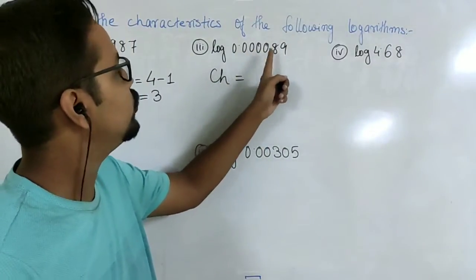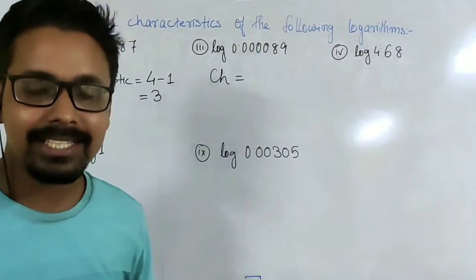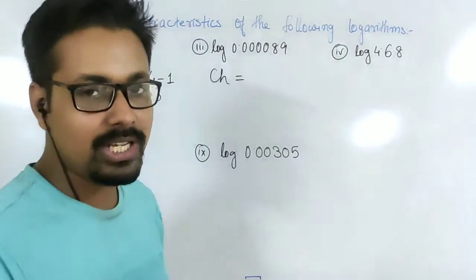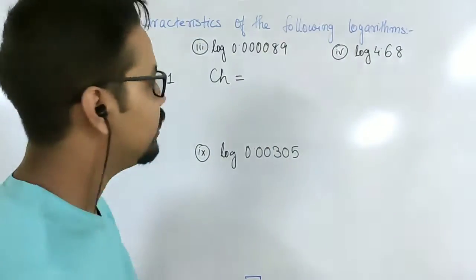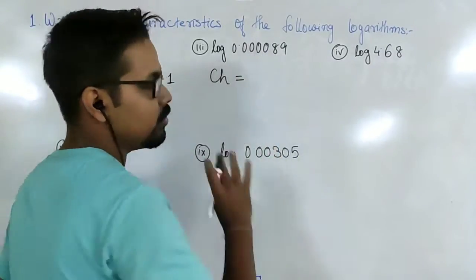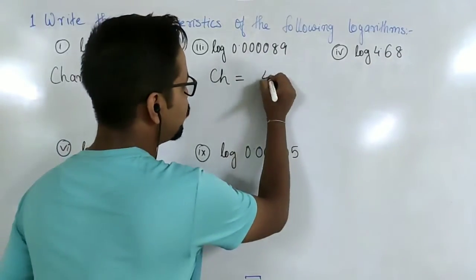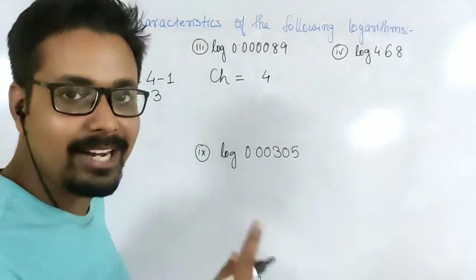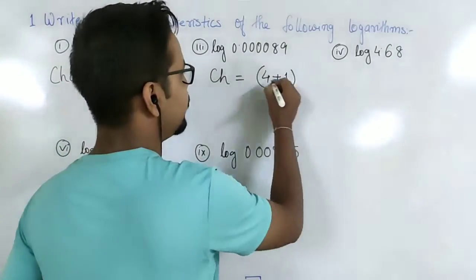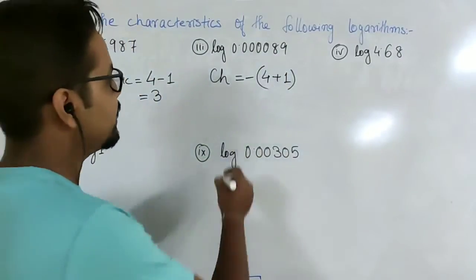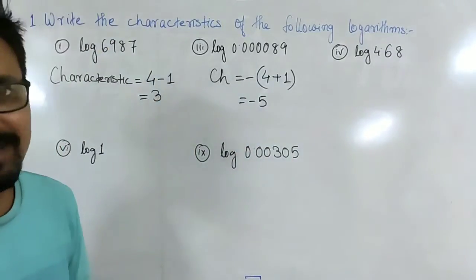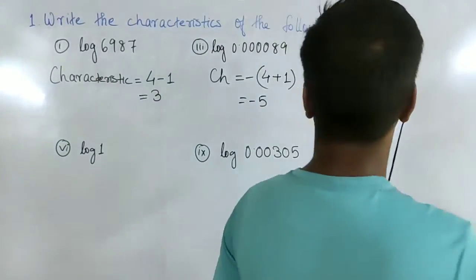For the number 0.000089, the number is less than 1. We count the zeros after the decimal point. After the decimal point there are 1, 2, 3, 4 zeros. So n equals 4, and we add 1 and apply the negative sign. The characteristic is minus 5.